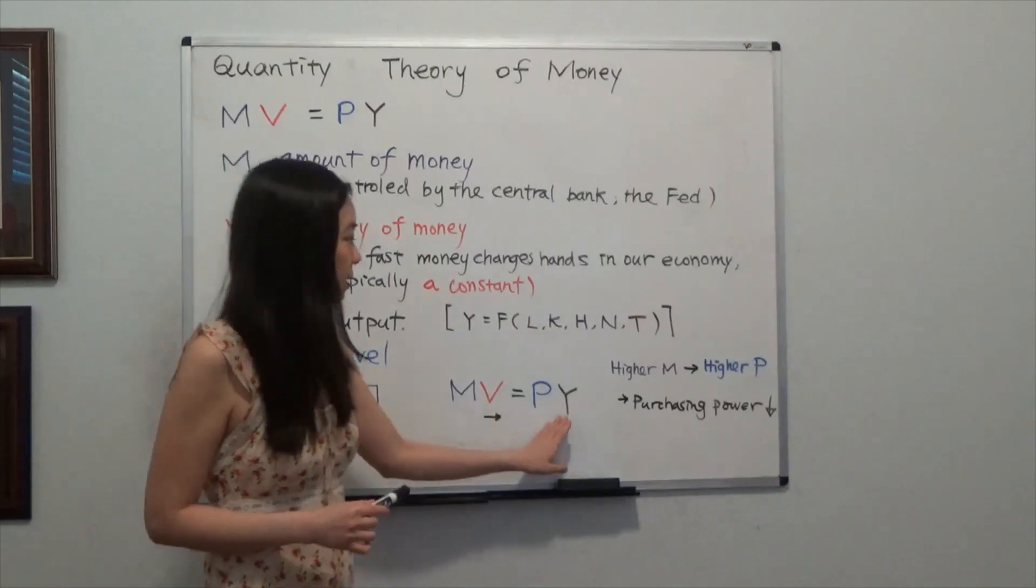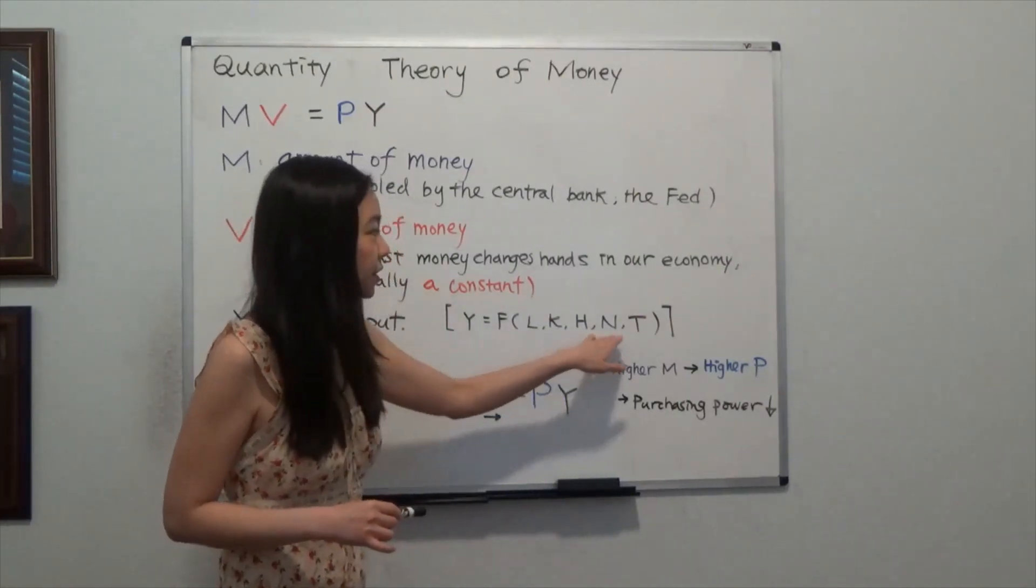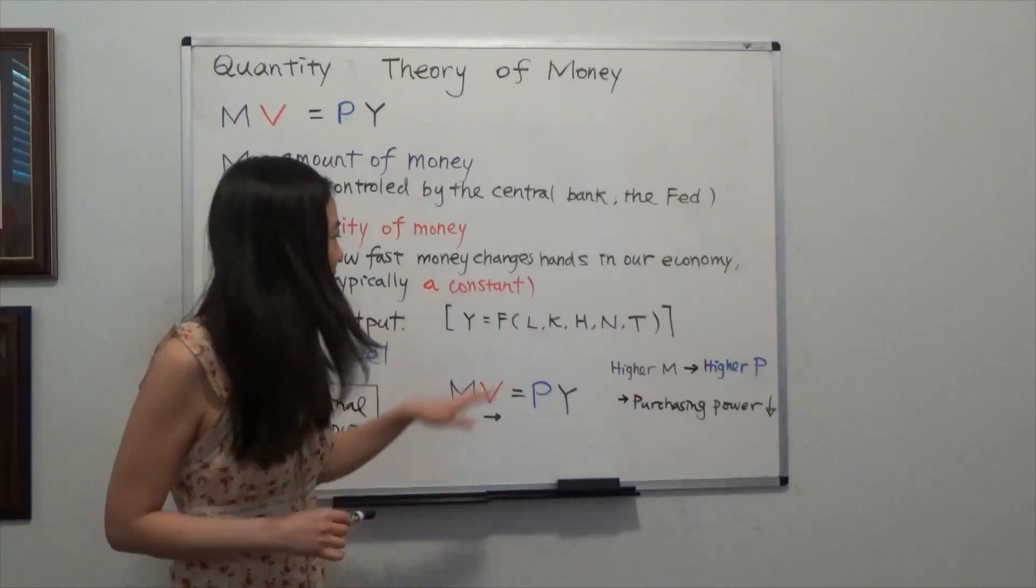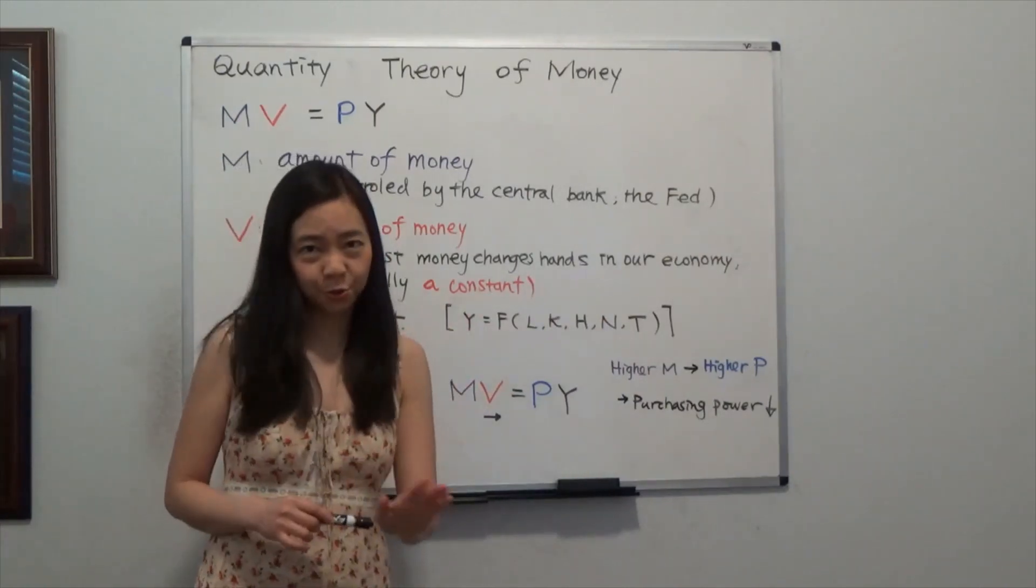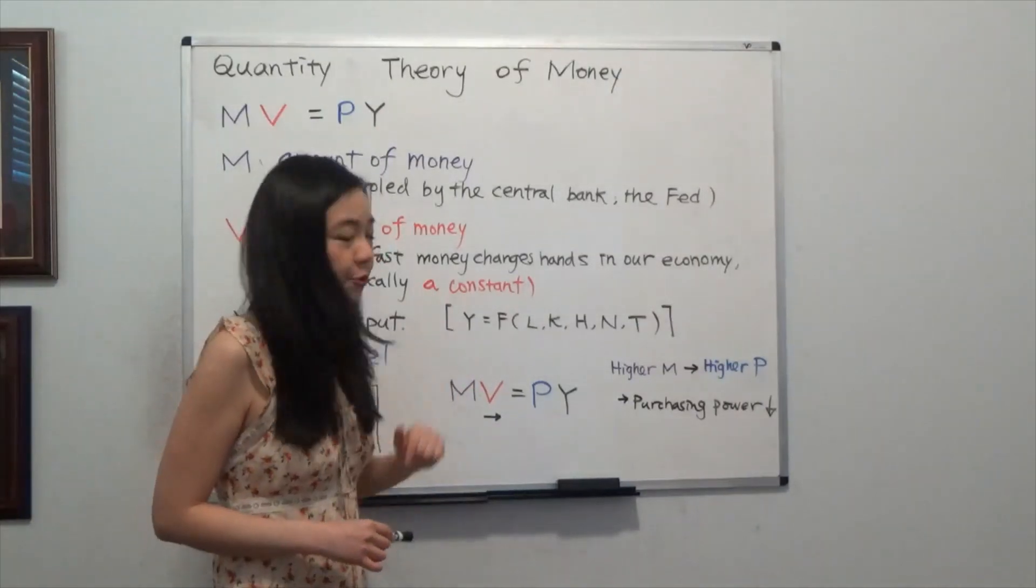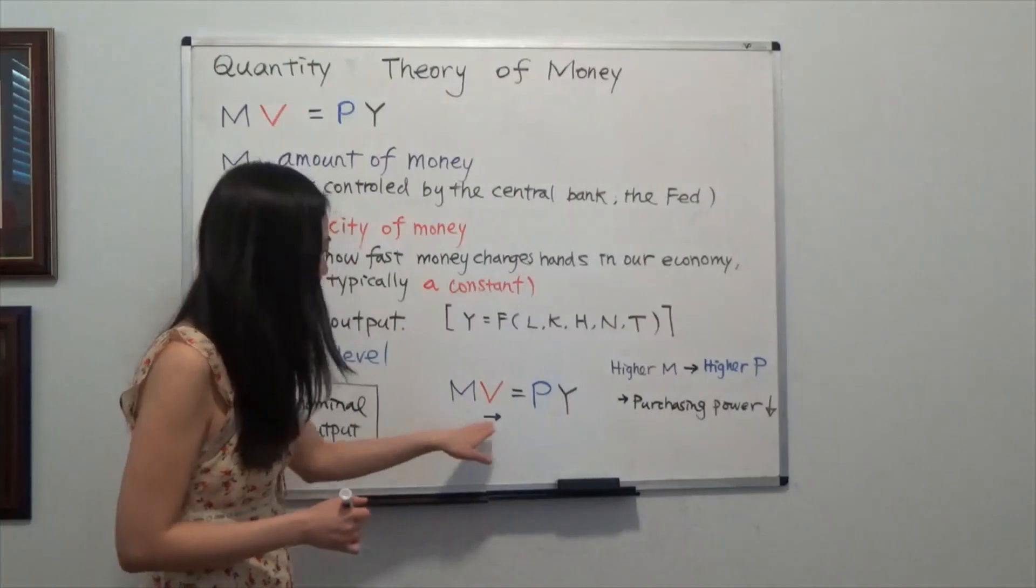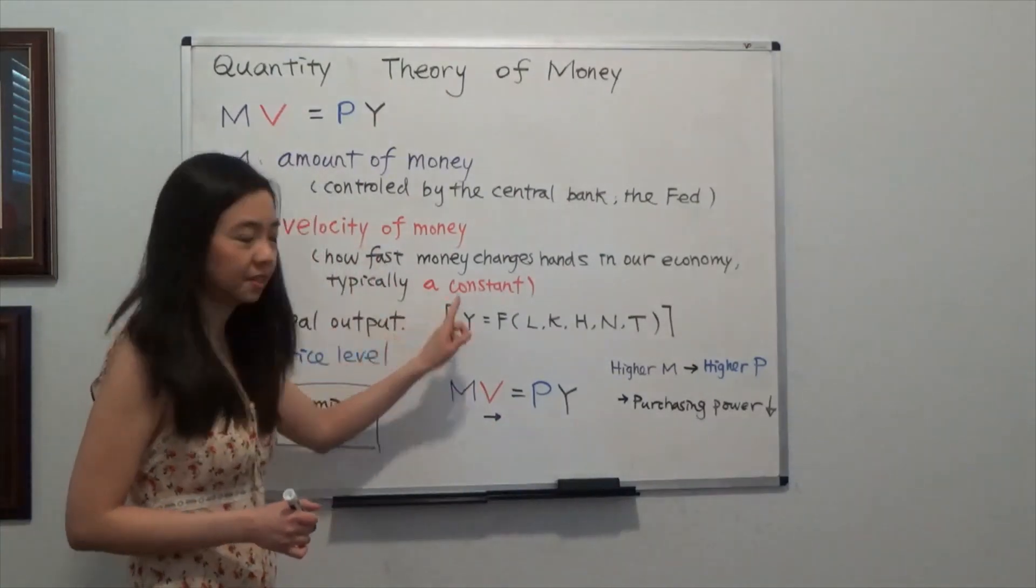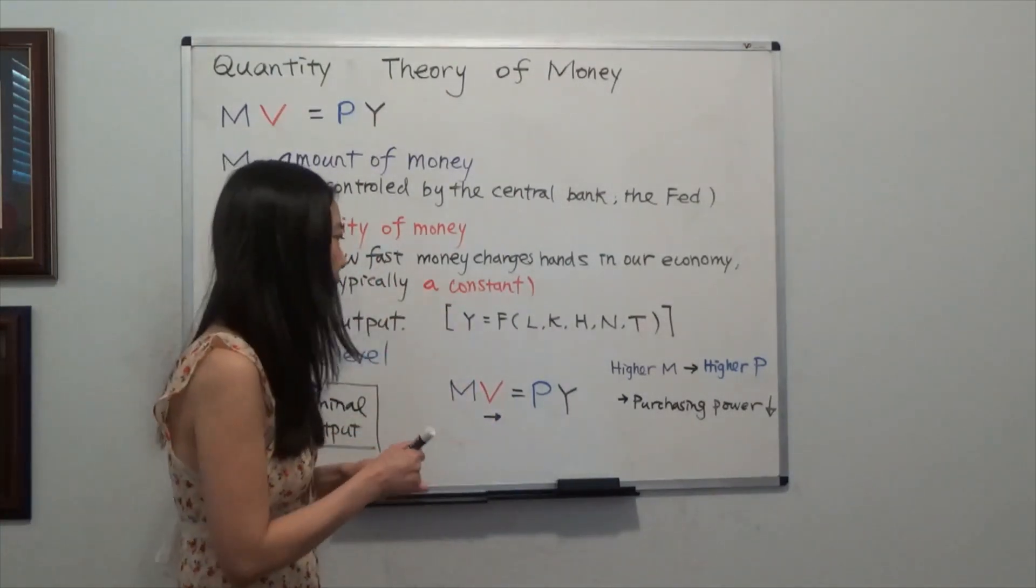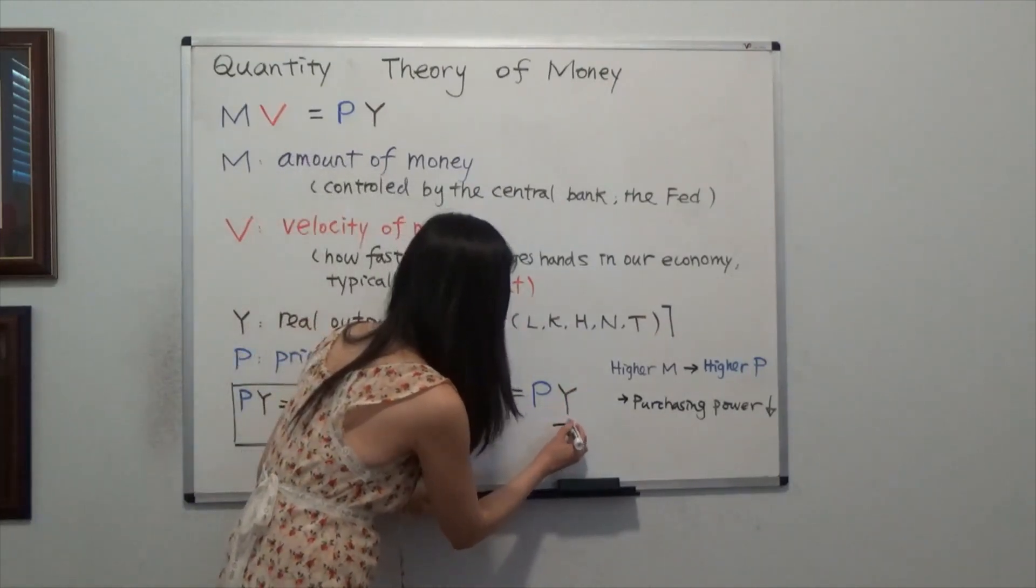Now we know that the real output is a function of the resources we have as well as the technology. The real output is not going to be affected by the amount of money the government brings or by the price level. The velocity of money is a constant—it is pretty stable. And we know our real output is not going to be affected by the price level.